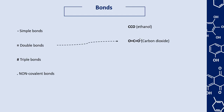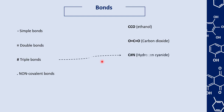The carbon in the middle of carbon dioxide is linked to the oxygen atoms by a double bond. To represent triple bonds, we use a hash symbol. For example, here we have hydrogen cyanide, and there is a triple bond between the carbon atom and the nitrogen atom.